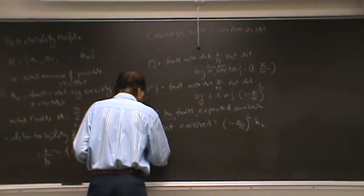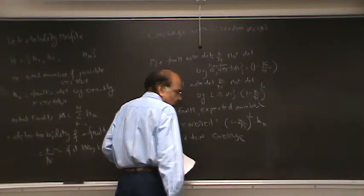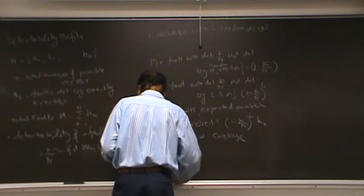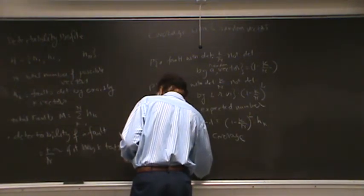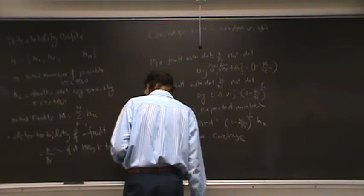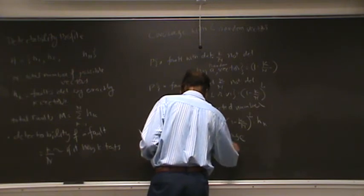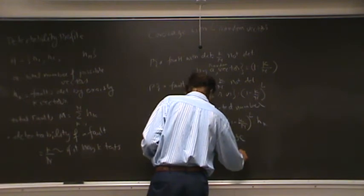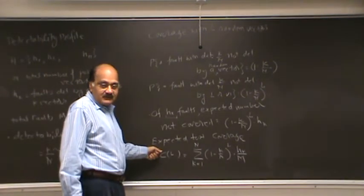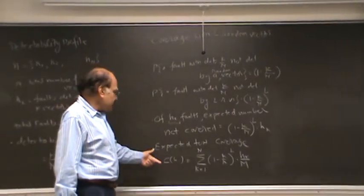Hence, expected test coverage for the whole circuit is given by l as indicated by c, a function of l, and that is equal to summation of k equal to 1 to n, 1 minus k by n, raised to l, h_k by m. m is the total number of faults. So remember, this is the number of faults and this is the coverage. So coverage, of course, is a normalized measure because coverage goes from anything to 1. So this is the important formula.